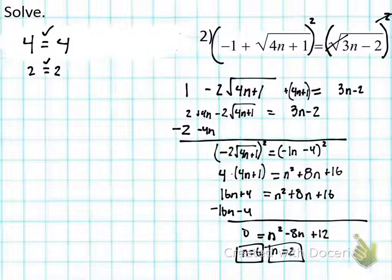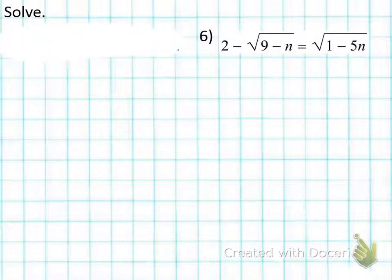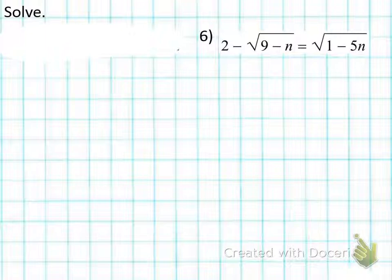Give me a thumbs up if you understand it but still need practice; thumbs down if you're lost and need something explained. Now I want to do number six because this is a special one — write this one down, it's in your notes. Turn to your neighbor and tell them what to do about step one: isolate the radical.